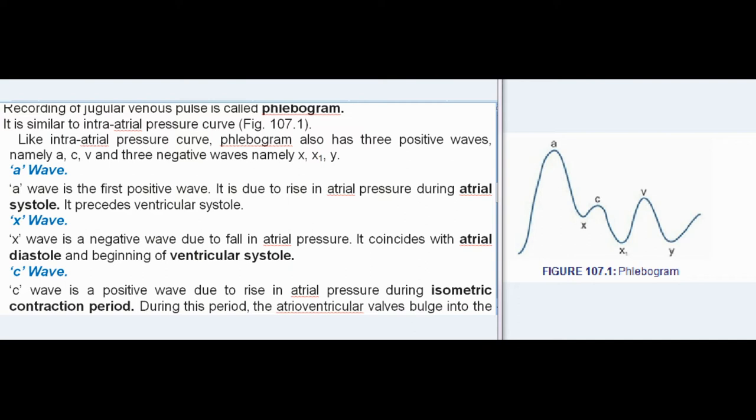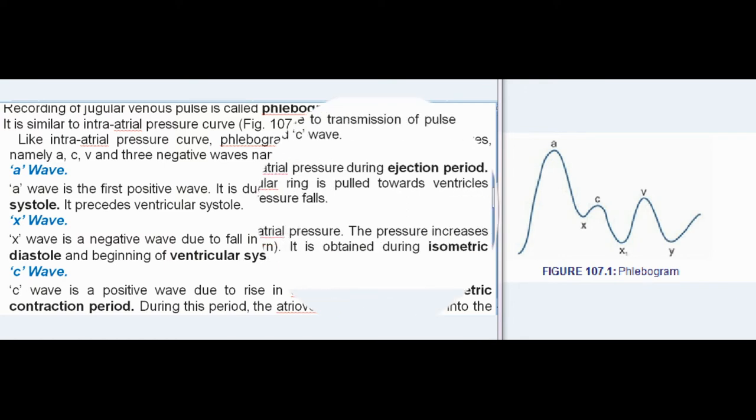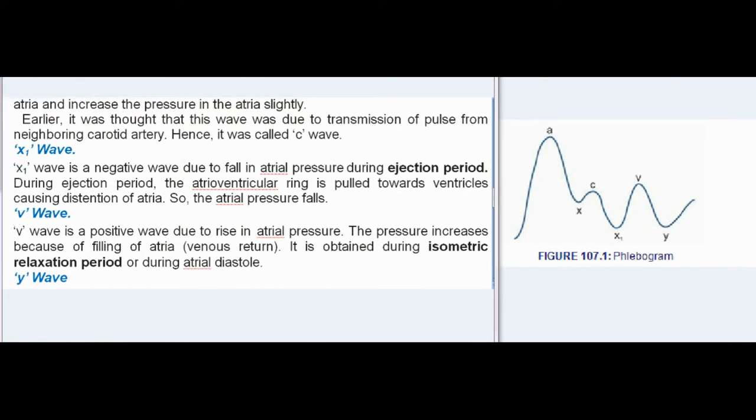C wave: C wave is a positive wave due to rise in atrial pressure during isometric contraction period. During this period, the atrioventricular valves bulge into the atria and increase the pressure in the atria slightly. Earlier, it was thought that this wave was due to transmission of pulse from neighboring carotid artery. Hence, it was called C wave.